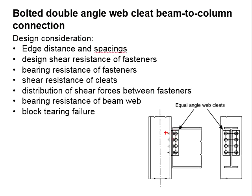The connections involve two angle cleats which are bolted to the column's flange and also to the web of the beam. For this type of connection, the joint will be between the beam and the angle as well as the angle with the column.